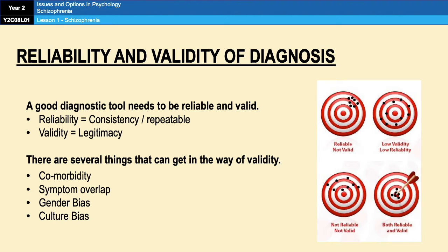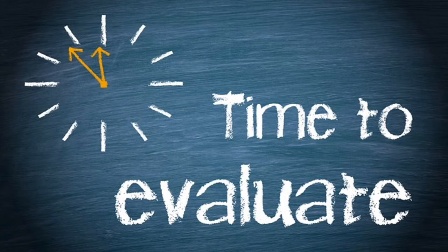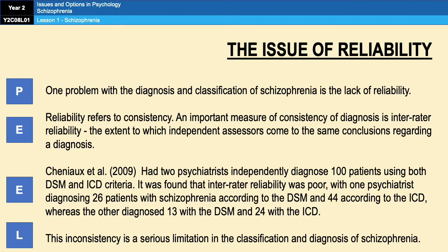It is very possible that in an exam you could be asked to explain what each of these terms means. So in the evaluation points I'll always make a point of defining comorbidity, symptom overlap, and so on. I would recommend noting those things as individual definitions, just in case a question asks you to explain what comorbidity or symptom overlap is. Now let's look at these evaluation points, starting with the issue of reliability.